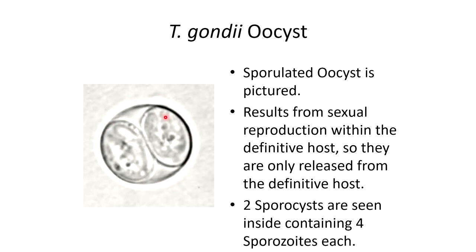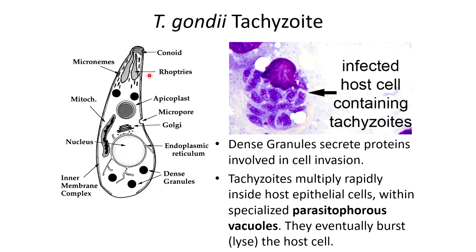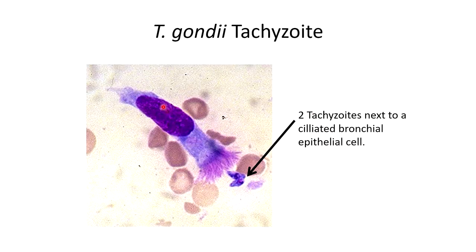Here's a more detailed image of a tachyzoite. Close to the center you can see the apicoplast, which is necessary for metabolism and possibly helping in invading the epithelial cells. More apical complex organelles up here also help invade the host cell. Here it's showing an infected host cell containing a bunch of tachyzoites in lighter purple. The black dots are known as dense granules, which secrete proteins that help with invasion. This area where the tachyzoites are located is referred to as the parasitophorous vacuole — that's where they undergo replication. Eventually they will burst or lyse the host cell when they become too numerous.